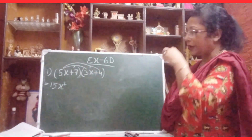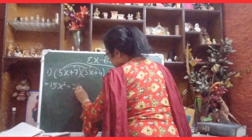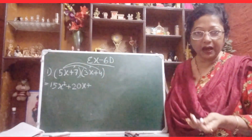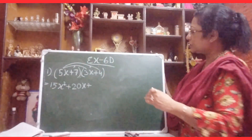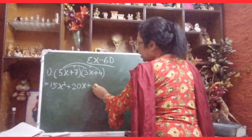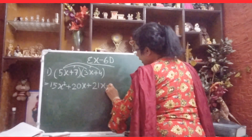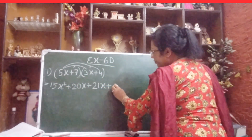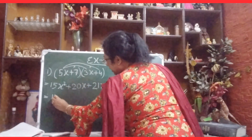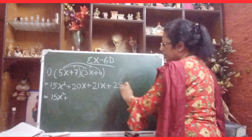Now multiply 5x with 4, that gives plus 20x. Then 7 into 3x gives 21x. And 7 into 4 gives 28. So we have 15x squared plus 20x plus 21x plus 28.